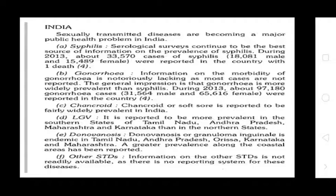LGV (Lymphogranuloma venereum) is reported to be more prevalent in the southern states of Tamil Nadu, Andhra Pradesh, Maharashtra, and Karnataka than in the northern states. Donovanosis is endemic in Tamil Nadu, Andhra Pradesh, Odisha, Karnataka, and Maharashtra, with greater reported prevalence along the coastal areas. Information on other STDs is not readily available as there is no reporting system for these diseases.